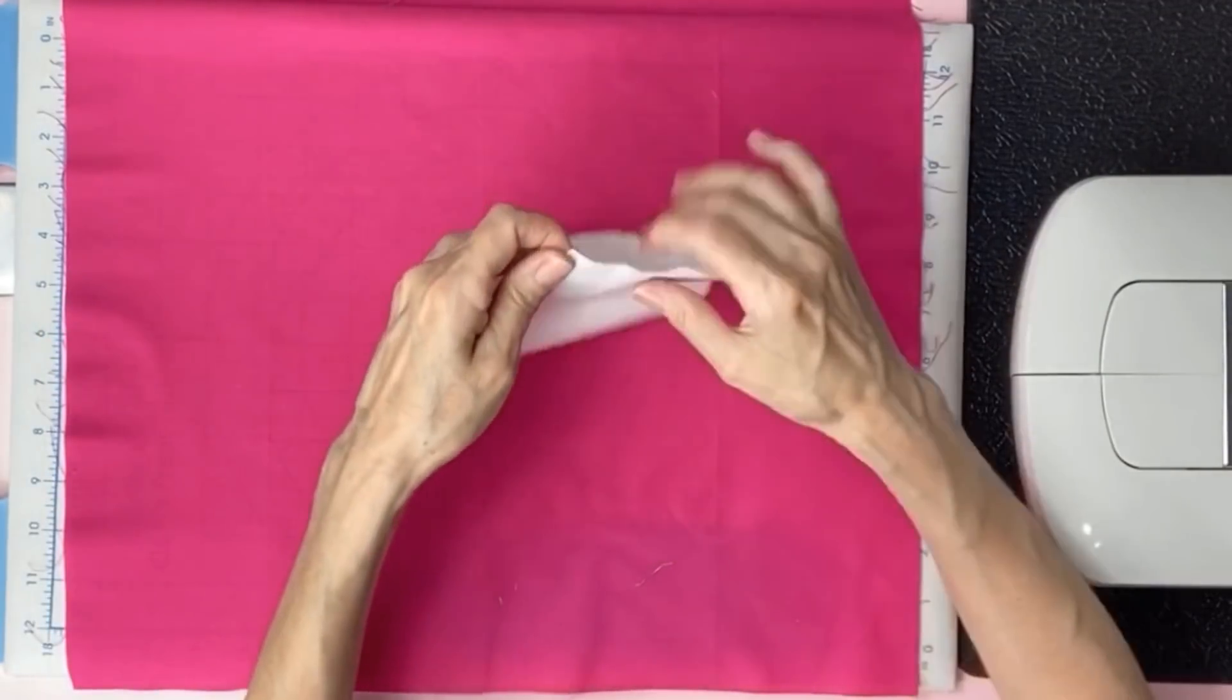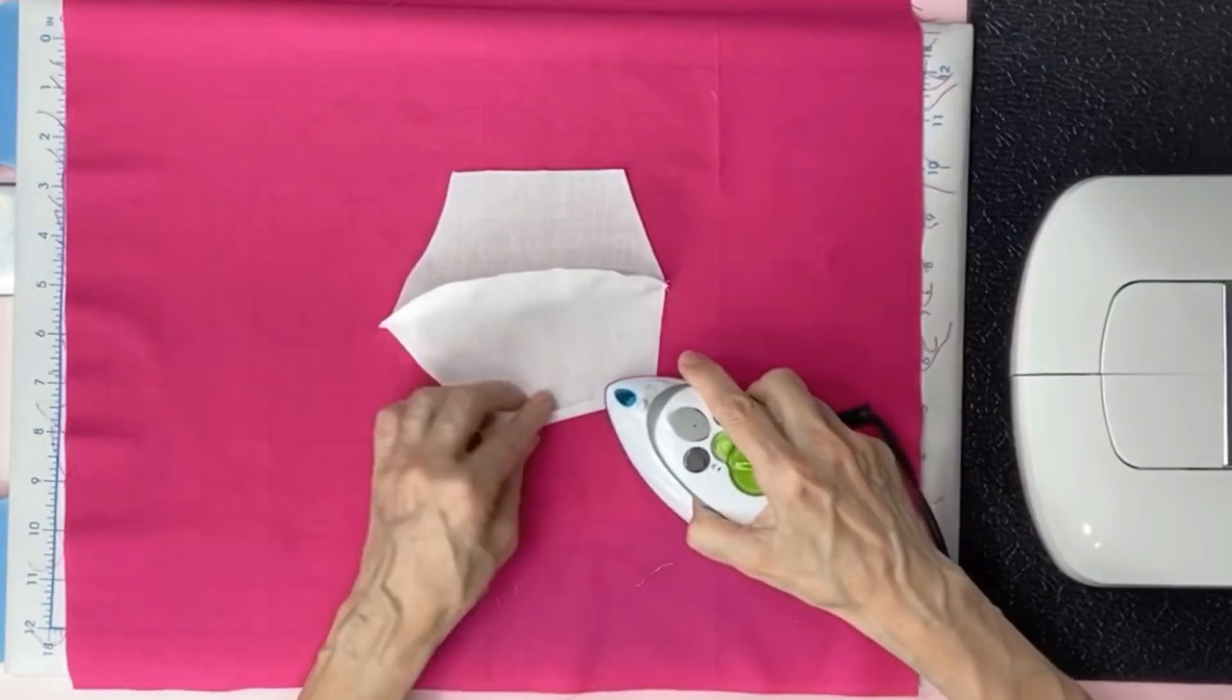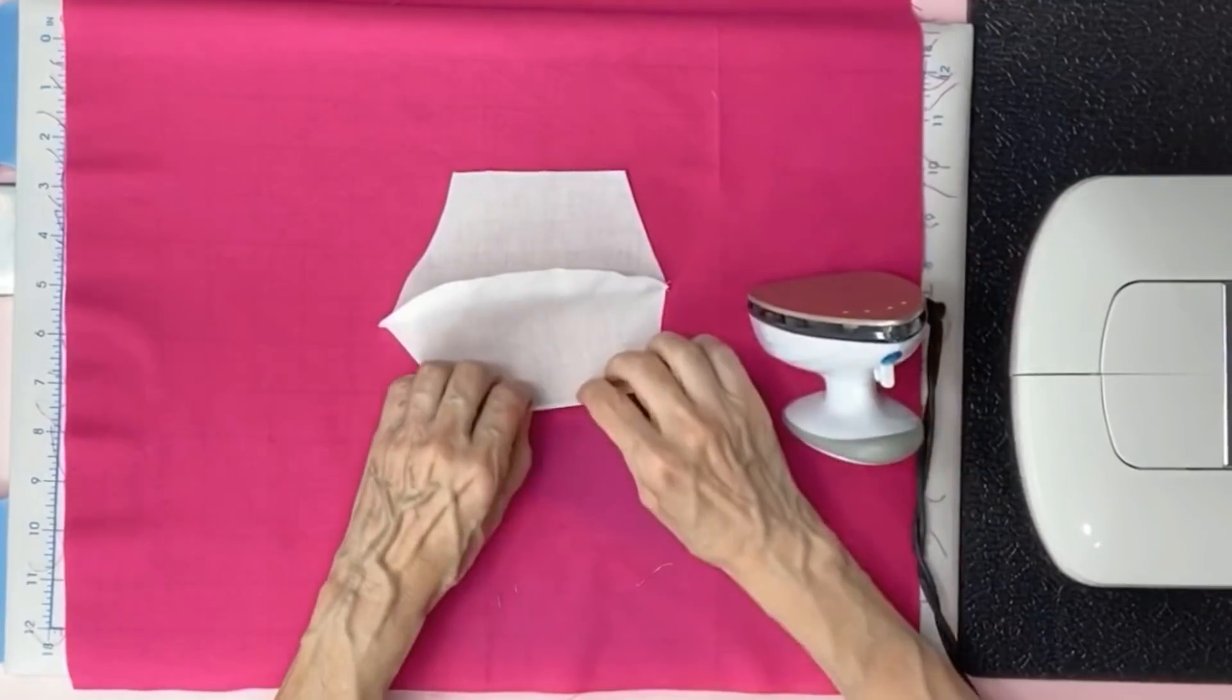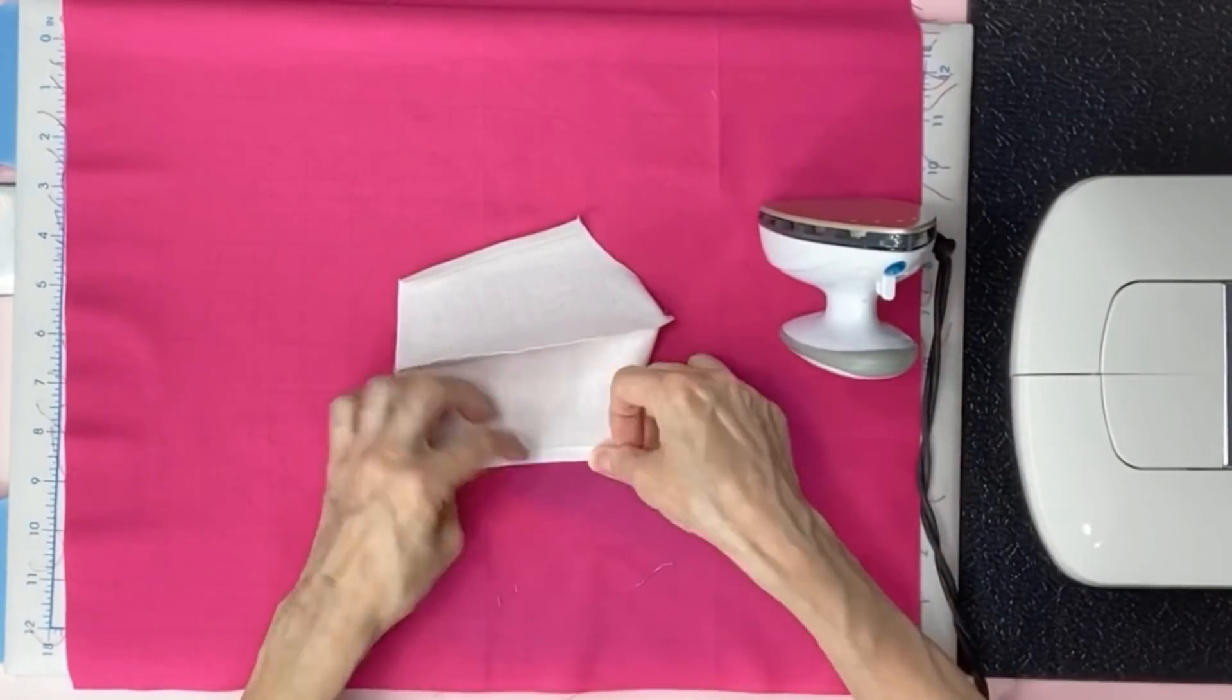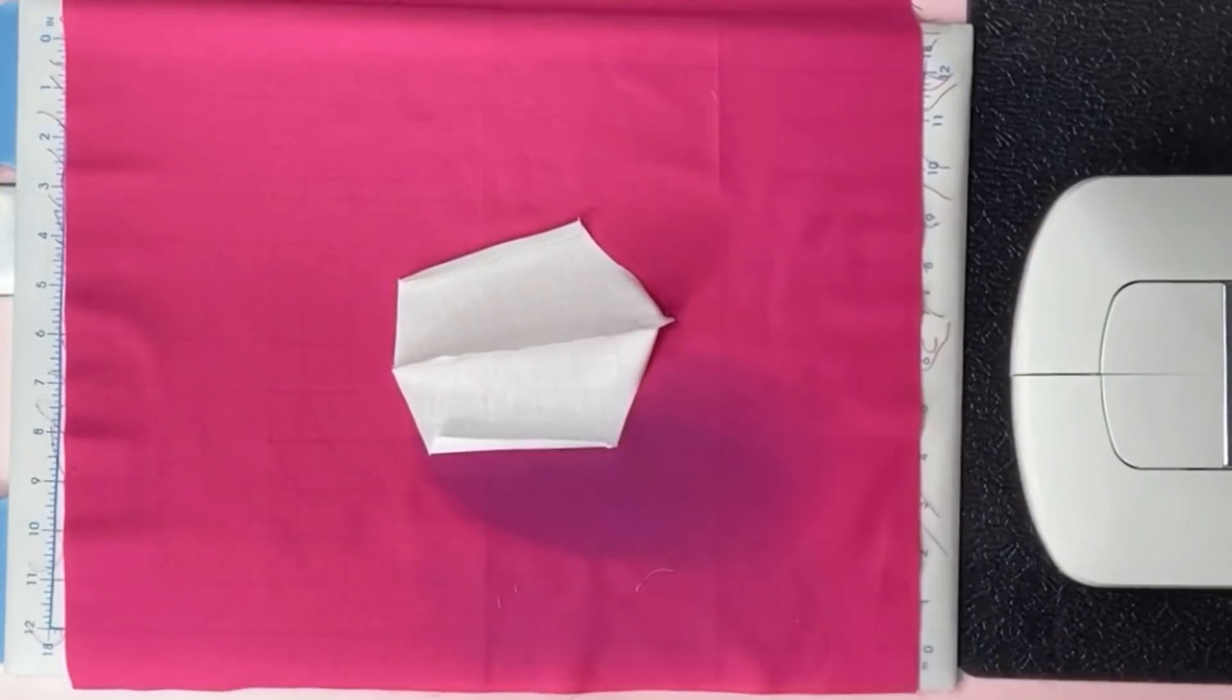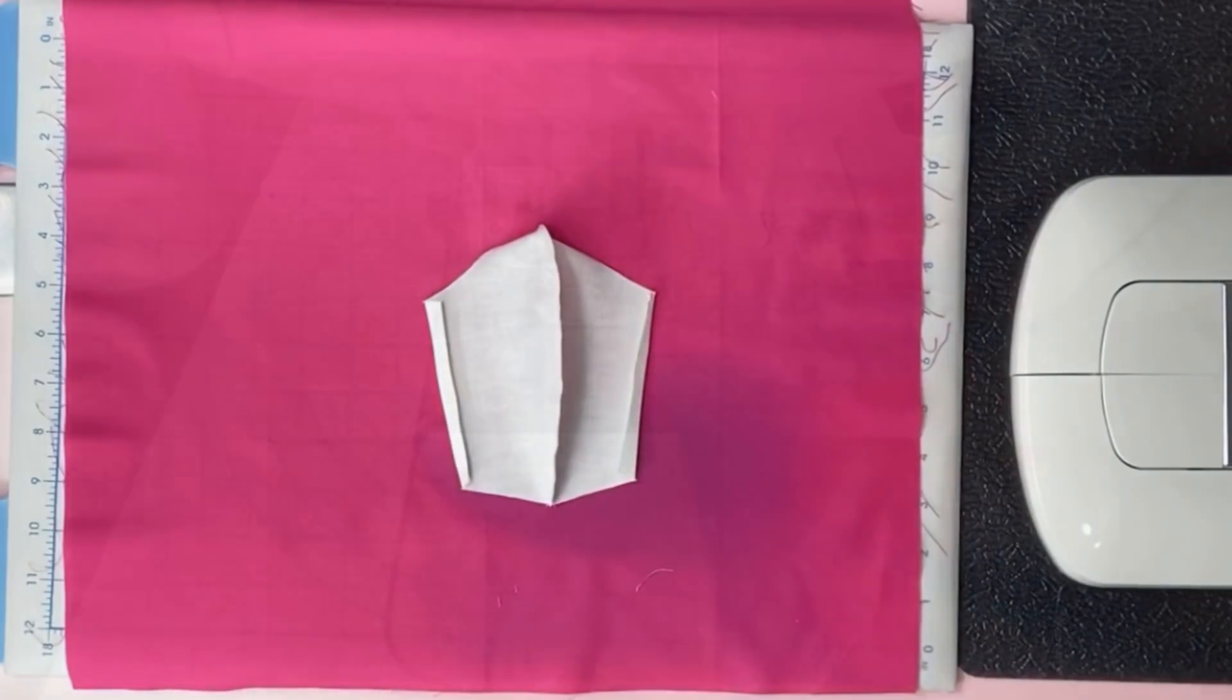Grab the liner. Open it up. Seams facing up. You want to fold over about a quarter of an inch and press. Fold over a quarter inch and press again. Flip it over and repeat for the other side. Take it to the sewing machine and sew straight down on each side.